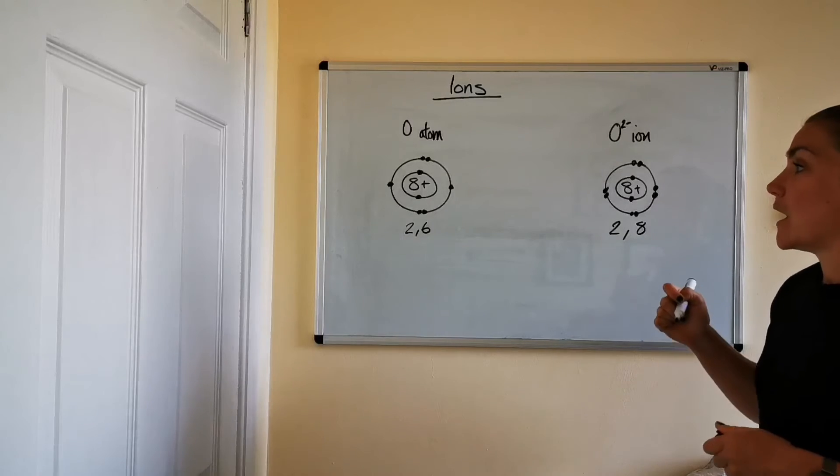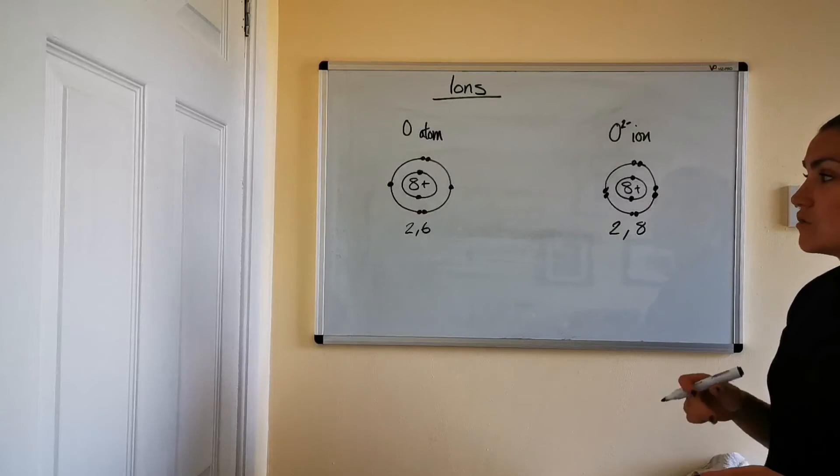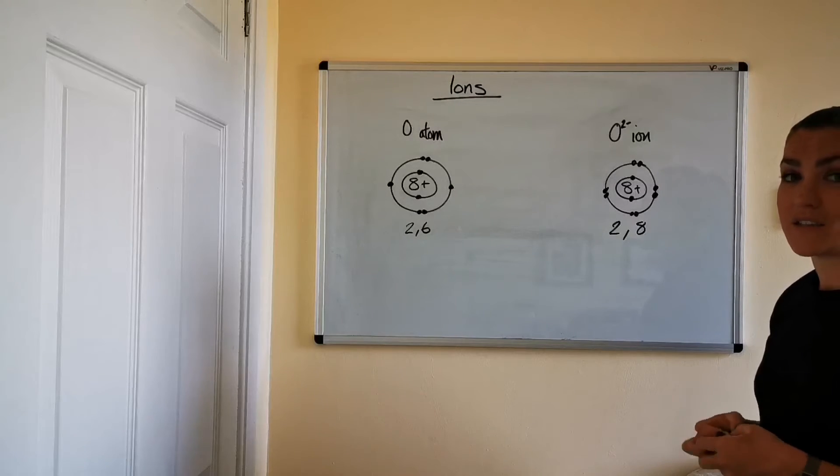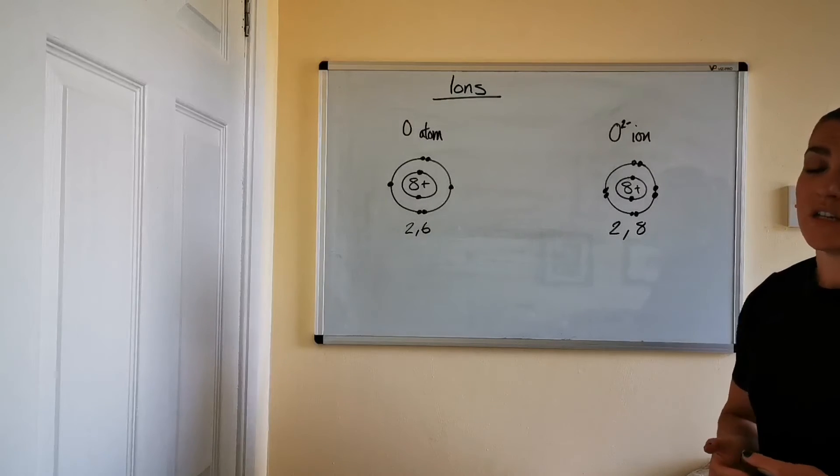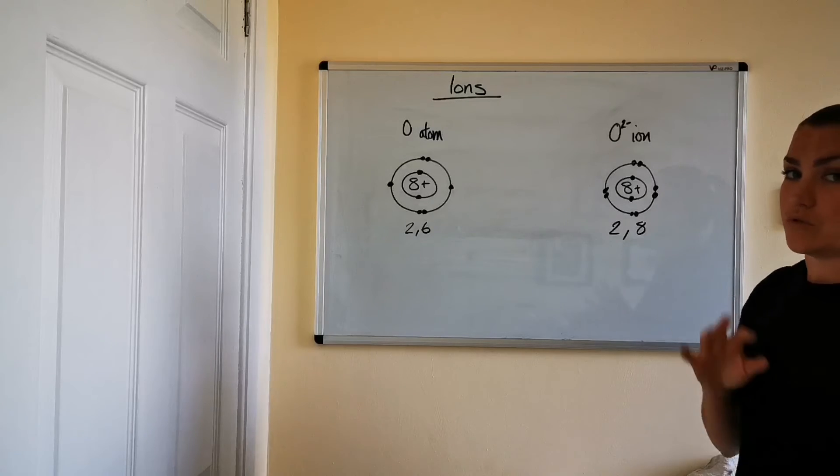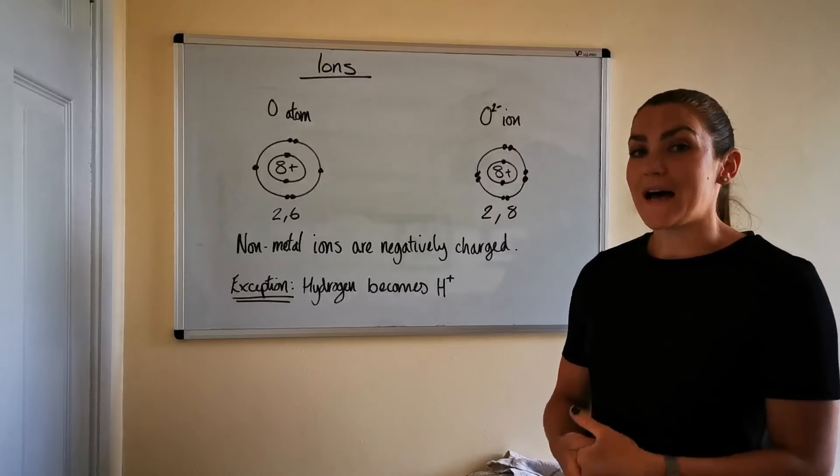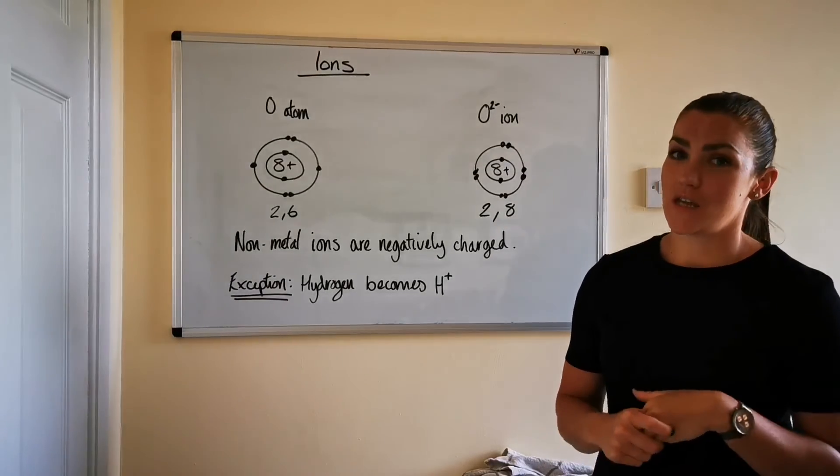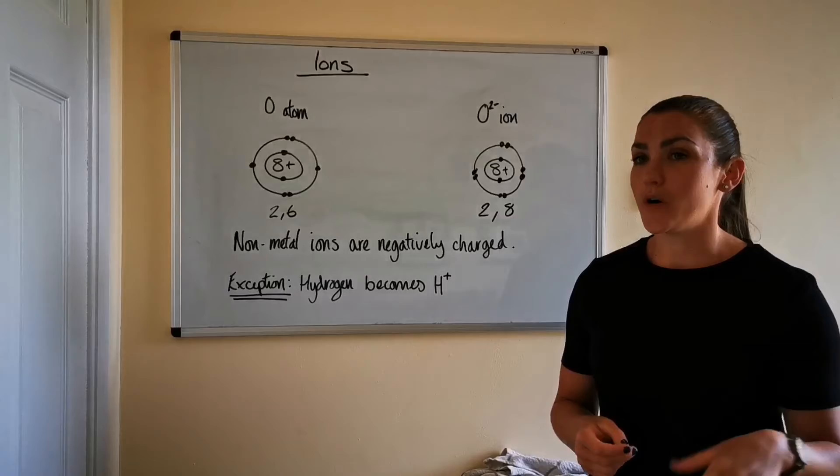Okay so again like with metals the rule of thumb with the non-metals is they always become negative ions because they're usually always having to gain electrons in order to obtain their stable full outer shell.